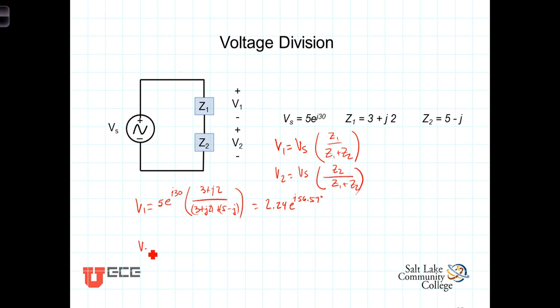Similarly, V2 then is going to equal 5e to the j 30, just Vs, times Z2, which is 5 minus j, divided by the sum of Z1, Z2, or 3 plus j2 plus 5 minus j. And you do those calculations and you get that V2 is equal to 3.16 e to the j 11.57.